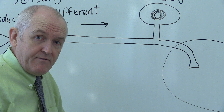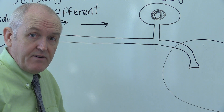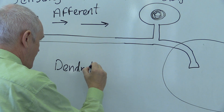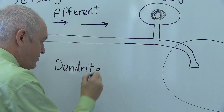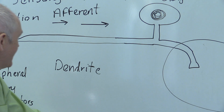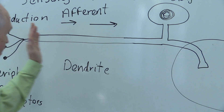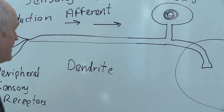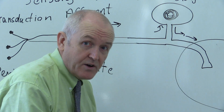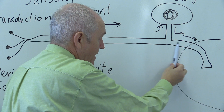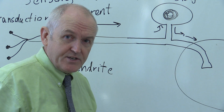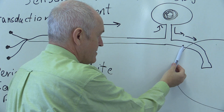Any fiber carrying information towards a nerve cell body is defined as a dendrite, so this is the dendrite of the sensory neuron. You might remember from the previous talk that motor neurons have short dendrites and long axons. Here we notice that sensory neurons have long dendrites — the information goes from the periphery to the cell body — and then the fiber going from the cell body into the spinal cord, which carries the impulse away from the cell body, is by definition an axon.